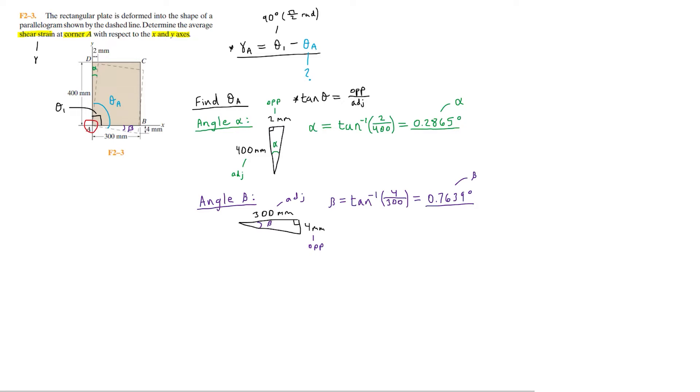Now that we found the values of angles alpha and beta, we can solve for the angle theta A. Looking at this original right triangle at corner A, the deformation creates the angle alpha over here and the angle beta down here. We want to find an expression for theta A. Looking at this diagram, we can see that the angle alpha sort of subtracts from the 90 degrees here, and the angle beta adds to the angle. Therefore, theta A equals 90 degrees minus alpha plus beta.